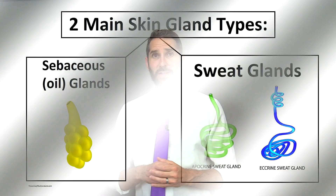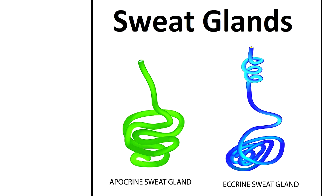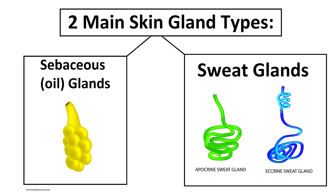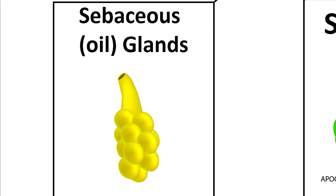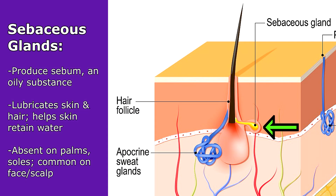To recap: the two main types of sweat glands found in the skin are eccrine and apocrine. The second main type of gland found in the skin is called the sebaceous oil gland. These glands produce sebum, an oily substance that helps lubricate the skin and hair.